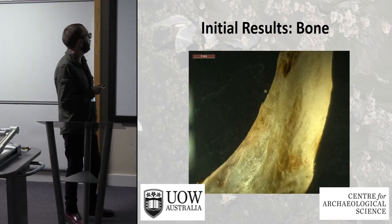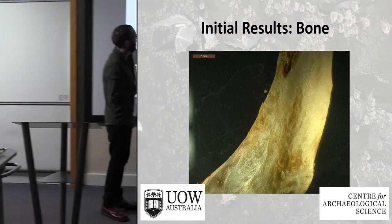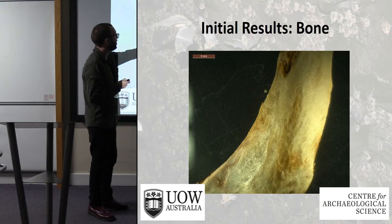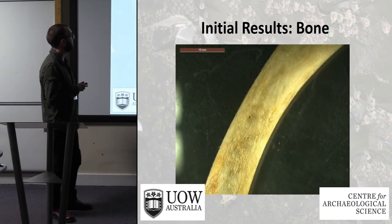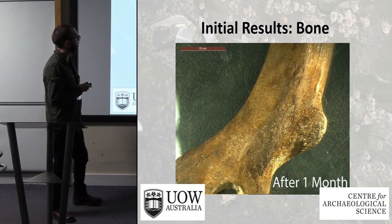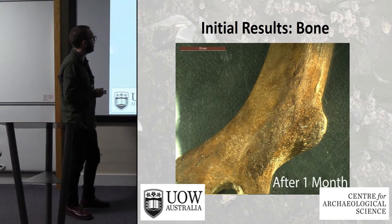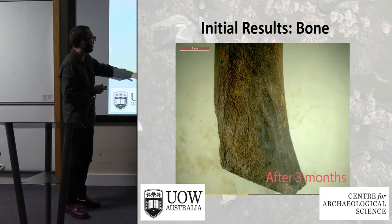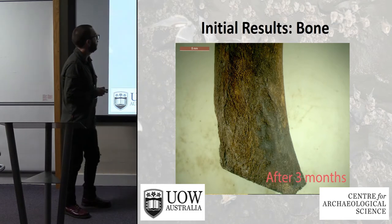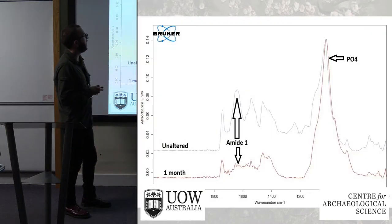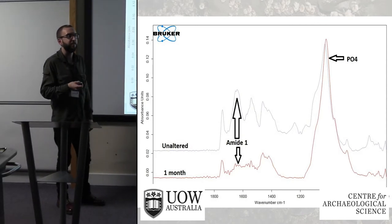This is the bone in its unaltered state — a relatively smooth surface with the exterior lamella visible. After one month you can see the surface is much rougher and already quite diagenetically altered. By three months the exterior lamella is gone and voids are visible.